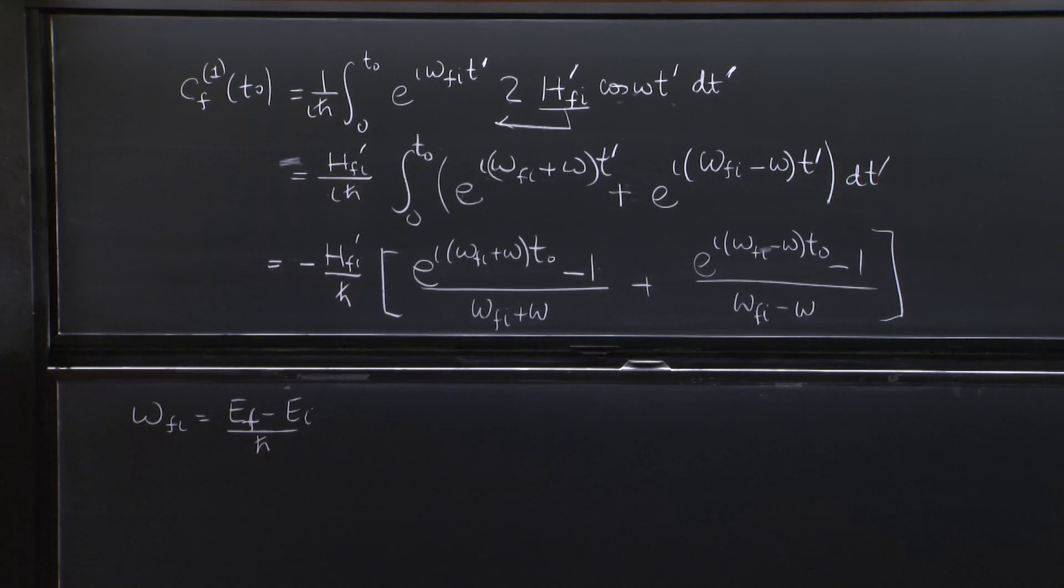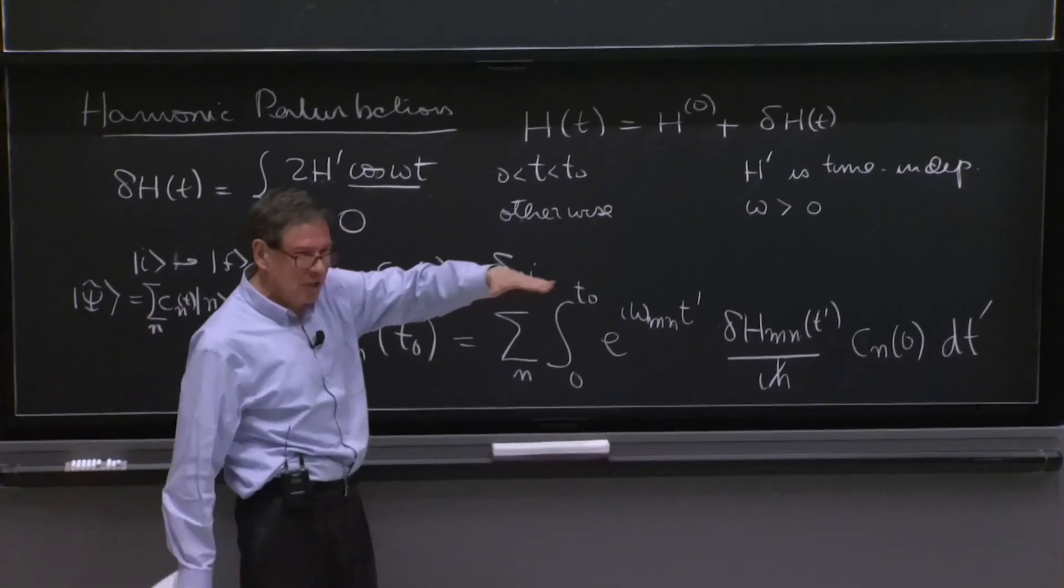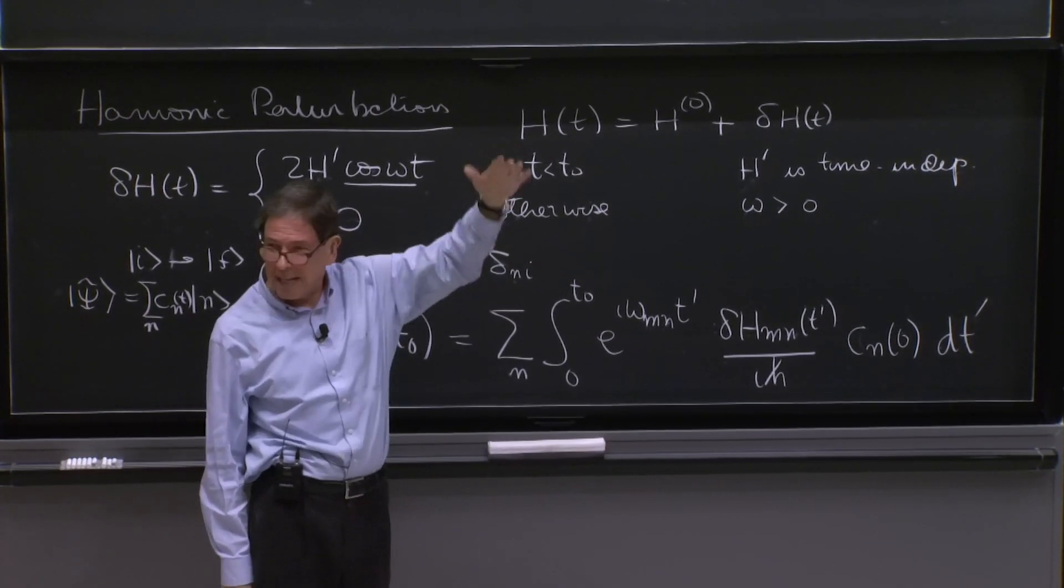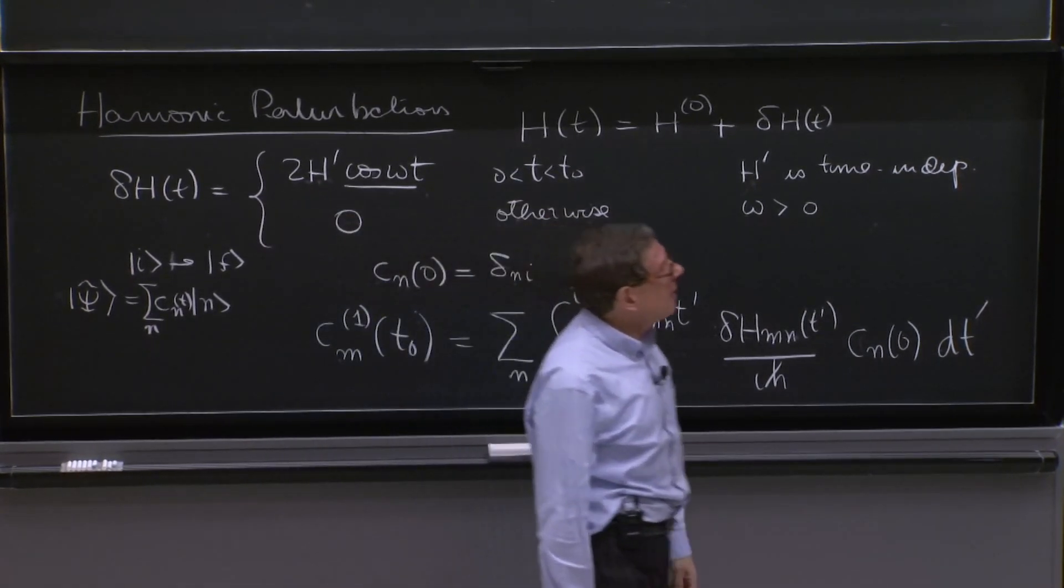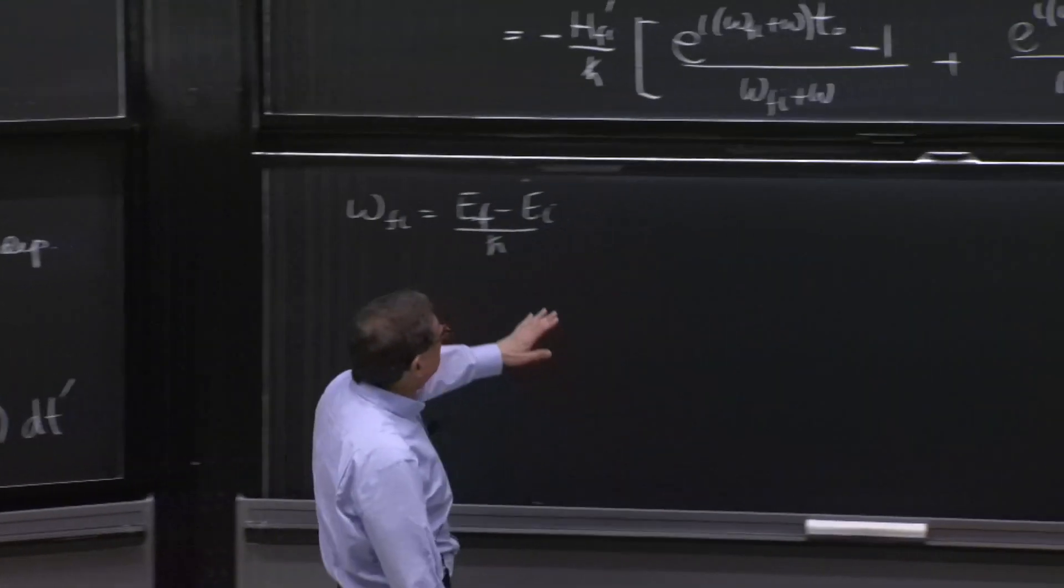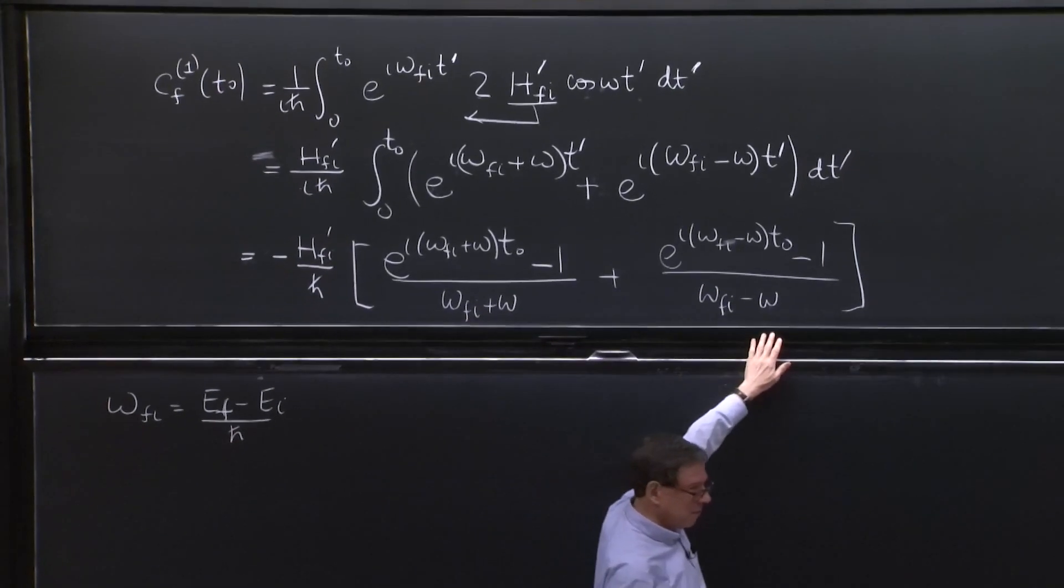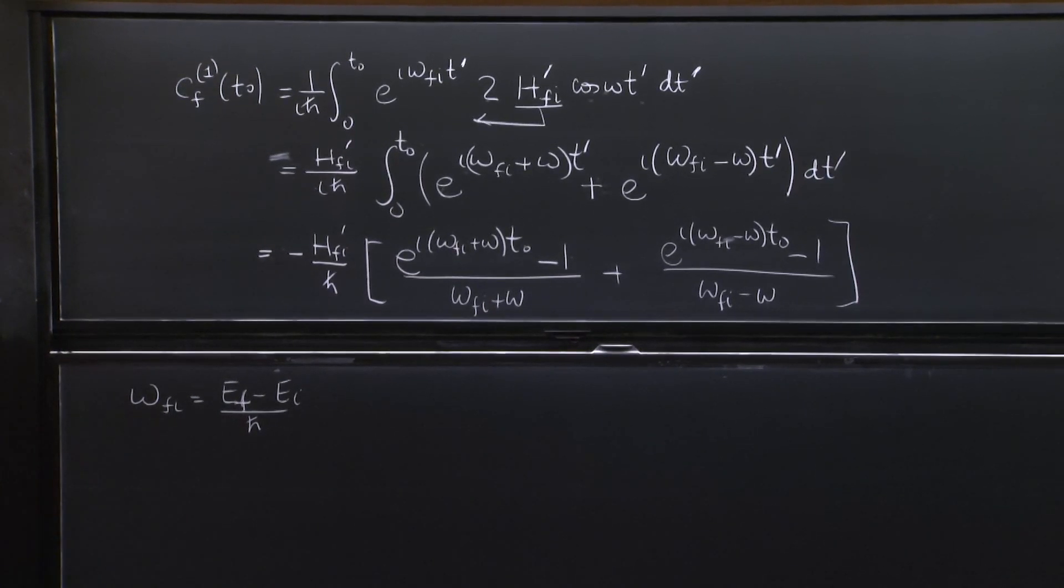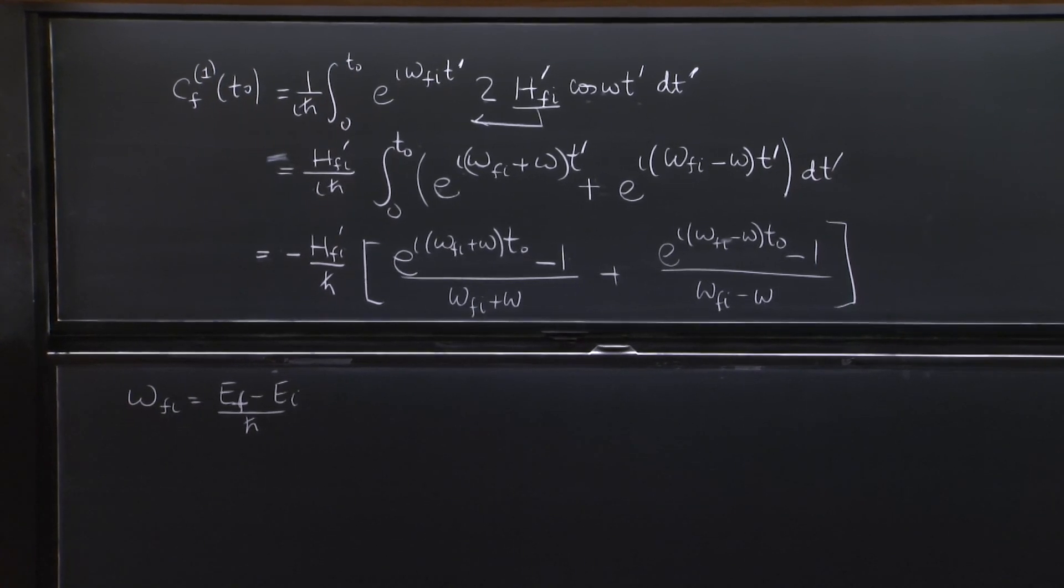So if I know my final discrete state, Ef, I can figure out what is the transition probability. Now, these denominators are intriguing because maybe if you adjust the frequency omega. Suppose you have an initial state and a final state here. You may adjust the frequency omega to match them. And in that case, maybe make the denominators equal to 0.